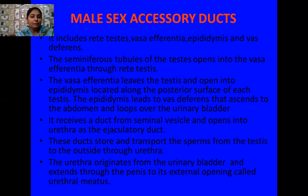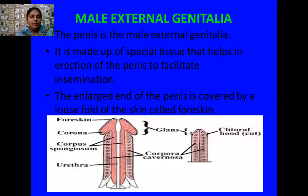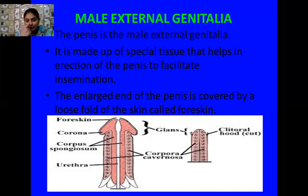The urethra originates from the urinary bladder and extends through the penis to its external opening called the urethral meatus. The chief male external genitalia is the penis. The penis is made up of special tissue that helps in its erection to facilitate insemination — the transfer of sperms into the female genital tract. The enlarged end of the penis is covered by a loose fold of skin known as the foreskin. The penis has the foreskin, corona, corpus spongiosum, corpora cavernosa, and the glans penis.